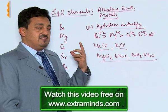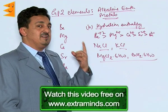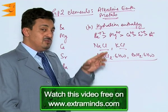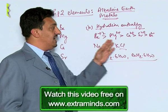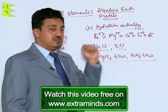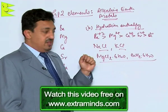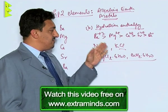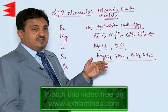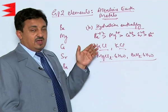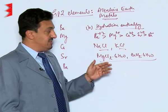Hydration enthalpy decreases down the group because ionic size also increases down the group. That is why, even though they have higher hydration enthalpies compared to alkali metals, this value decreases as we go down the alkaline earth metal group.